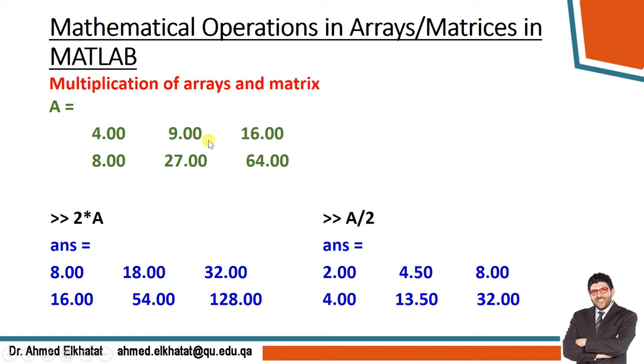We can also do multiplication of arrays and matrices. If I have A and I say 2 times A, each item will be multiplied by 2. So 4 becomes 8, 9 becomes 18, 27 becomes 54, 16 becomes 32, and 64 becomes 128.